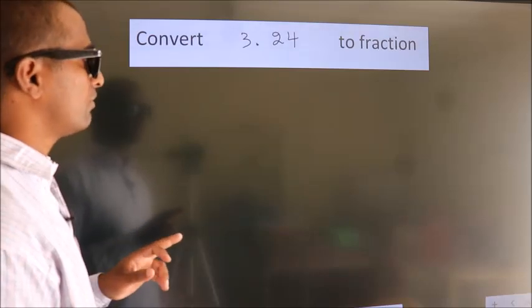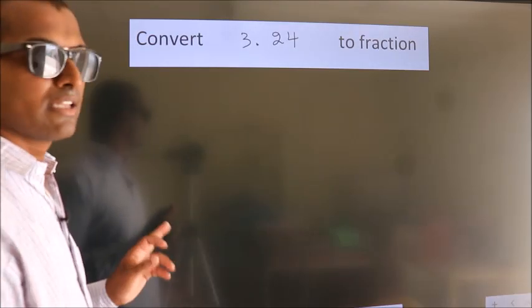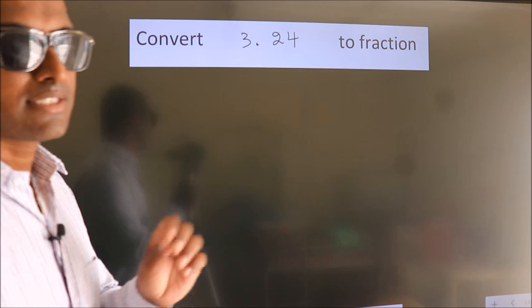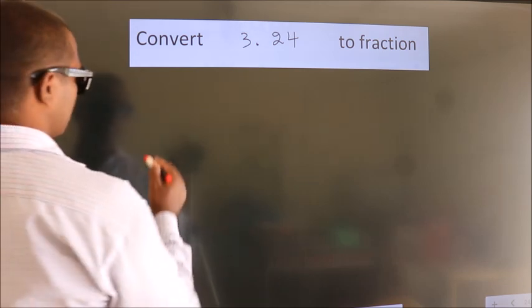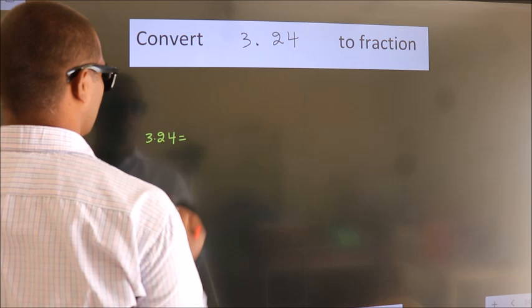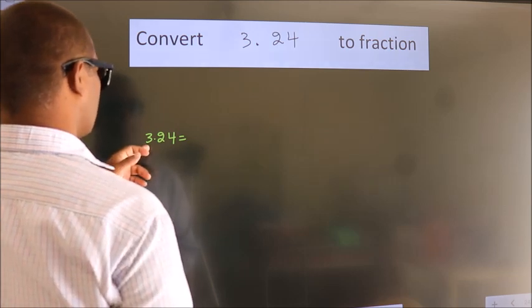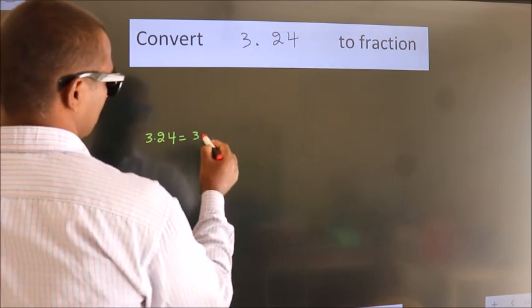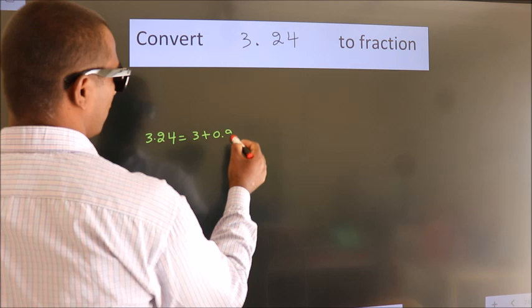Convert 3.24 to fraction. How do we convert this? Given is 3.24. First we should break this into 3 plus 0.24.